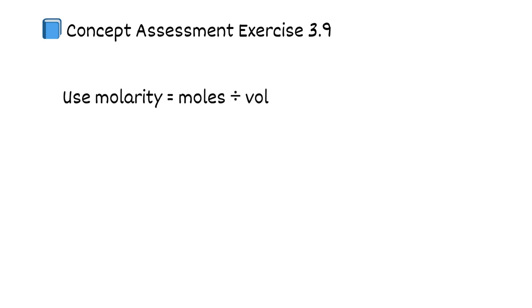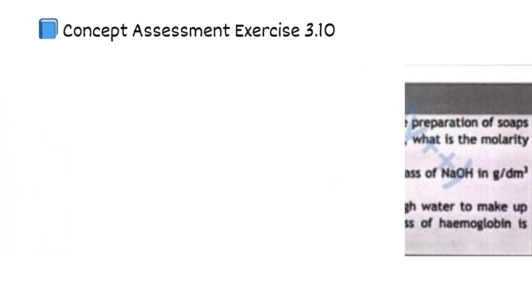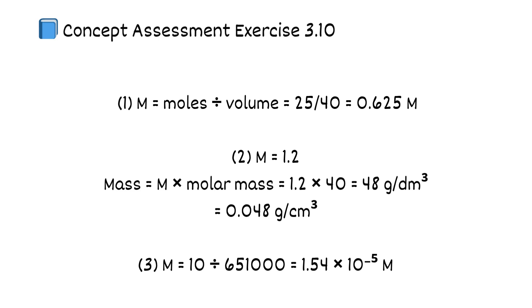Concept assessment exercise 3.9. Use molarity equals moles divided by volume dm³. A: 1.5 divided by 0.250 equals 6.0 M. B: moles equals 75 divided by 122.5 equals 0.612. M equals 0.612 divided by 1.25 equals 0.49 M. Concept assessment exercise 3.10. (1) M equals moles divided by volume equals 25 divided by 40 equals 0.625 M. (2) M equals 1.2, mass equals M times molar mass equals 1.2 times 40 equals 48 grams per dm³ equals 0.048 grams per cm³. (3) M equals 10 divided by 651,000 equals 1.54 times 10 to the power of negative 5 M.